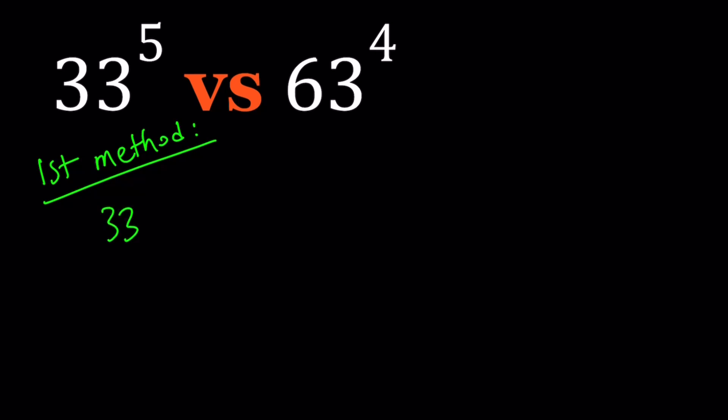33 is greater than 32, so I can safely say that 33 to the fifth power is greater than 32 to the fifth power, because one of the bases is larger than the other. When you raise it to the fifth power, it's not going to change. But 32 to the fifth power can be written as 2 to the fifth to the fifth power, which can then be written as 2 to the power 25. Awesome, great.